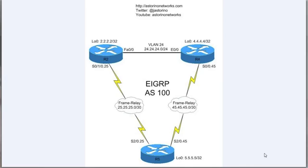Before we understand what stub routing does, we need to understand a little bit about how EIGRP works internally. Imagine that router 2 and router 4 are at a main headquarters site, connected through a high-speed LAN interface. Behind them is your entire enterprise network — could have hundreds or even thousands of different routes. Down here we've got a branch site connected redundantly over two WAN links, so router 5 represents the branch, dual-homed to both router 2 and router 4, running EIGRP.